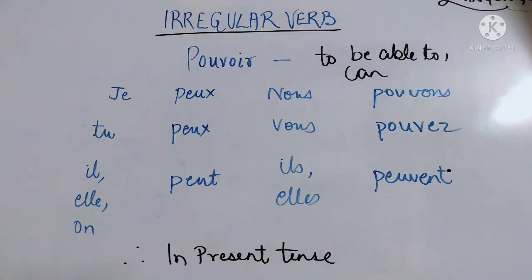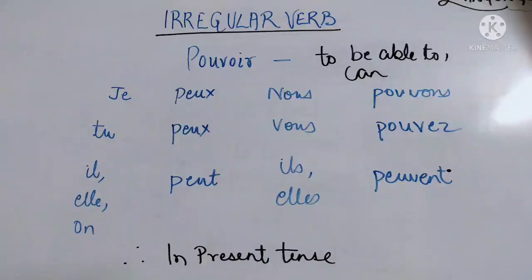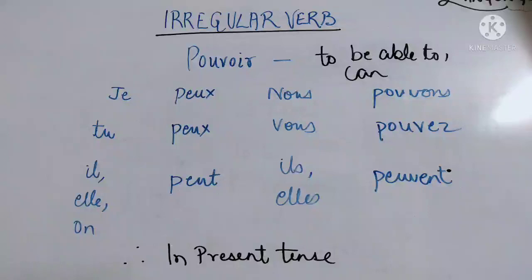'Vous pouvez' — you can. 'Ils peuvent'. Spellings: 'je peux' — P-E-U-X. 'Tu peux' — P-E-U-X. 'Il peut' — P-E-U-T. 'Nous pouvons' — P-O-U-V-O-N-S. 'Vous pouvez' — P-O-U-V-E-Z. 'Ils peuvent' — P-E-U-V-E-N-T.